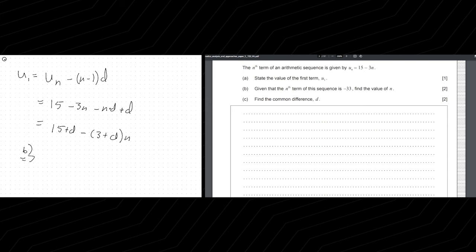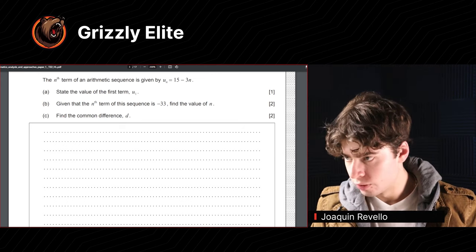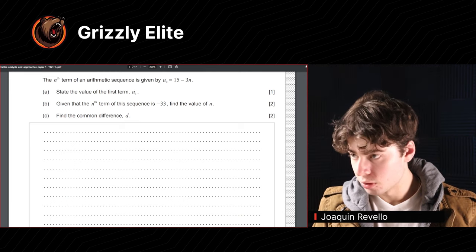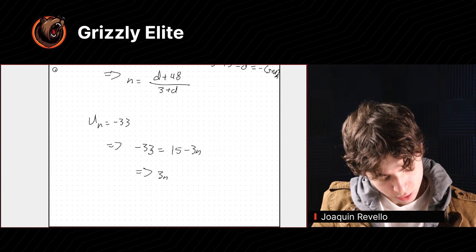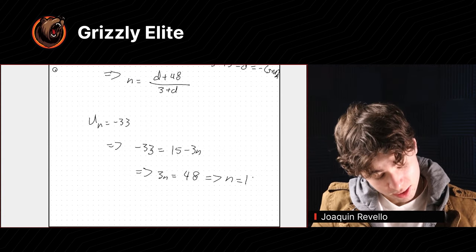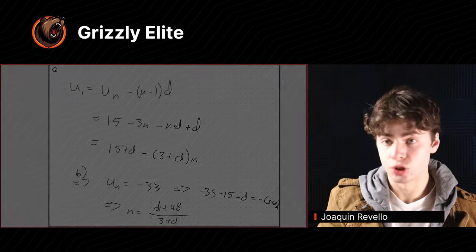Find the value of N. We know that U of N is equal to negative 33, and we need to find N. I would just plug this in. We get some canceling with the negatives. Then find the common difference D — but I realized there's actually a much easier way. U of N equals negative 33, which means negative 33 equals 15 minus 3N. Bring 3N over: we get 48, so N equals 16. Now I can just plug that in and solve for D, which I'm not going to do because it's literally just algebra.